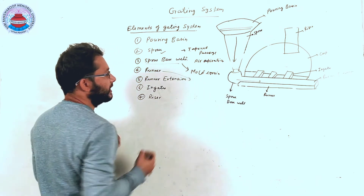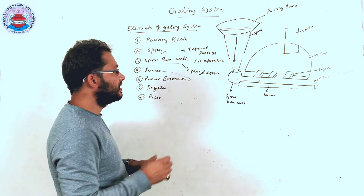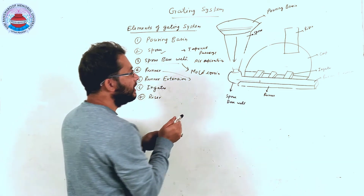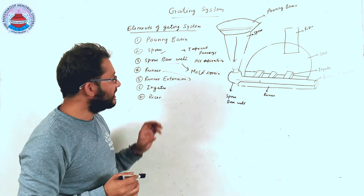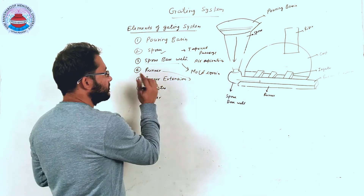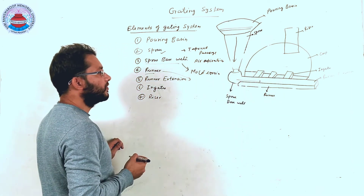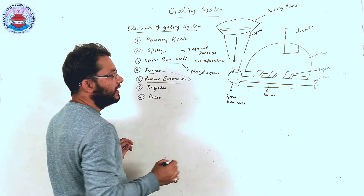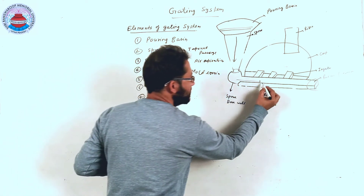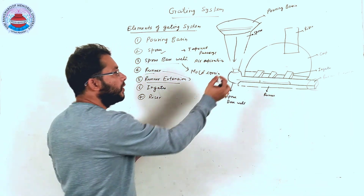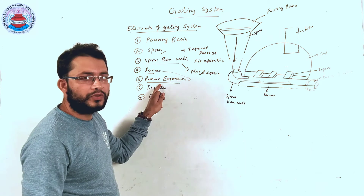The next element is the runner. The runner is placed in the horizontal plane so that molten material can enter the mold cavity from various gates. The shape of the runner is basically trapezoidal, and it leads molten material to enter the mold cavity from the ingate. Runner extension is placed at the end of the gating system so that impurities, carried by the velocity of molten material, get collected at the end of the runner extension.